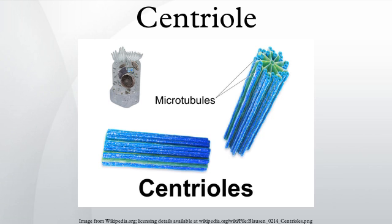Most centrioles are made up of nine sets of microtubule triplets arranged in a cylinder. Deviations from this structure include C. elegans and Drosophila melanogaster embryos, with nine doublets, and C. elegans sperm cells and early embryos with nine singlets.